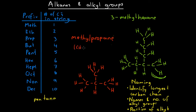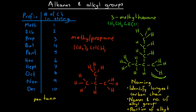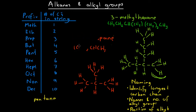If we want the semi-structural formula for methylpropane, we write: CH₃CH(CH₃)CH₃ — two CH₃ groups coming off the central carbon. For 3-methylhexane, it's a bit longer: CH₃CH₂CH(CH₃)(CH₂)₂CH₃. The semi-structural formula for 3-methylhexane doesn't simplify things much and is harder to interpret.